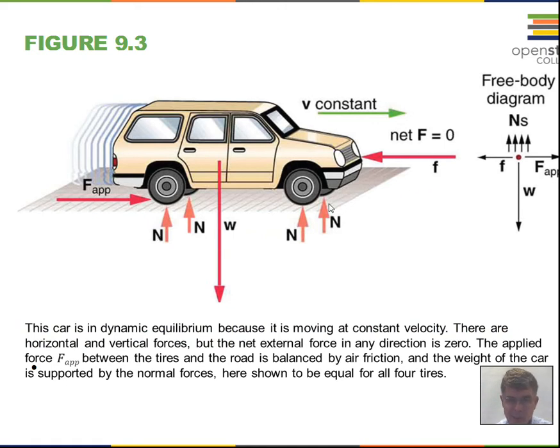There's a normal force at each tire upward. The sum of those four forces equals the weight downward. The tires are pushing on the road. The road is pushing back on the tires, and that forward force matches the air resistance and friction that might be present, retarding the motion of the vehicle.